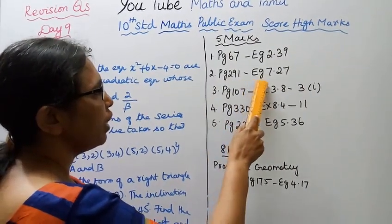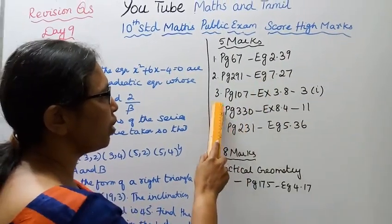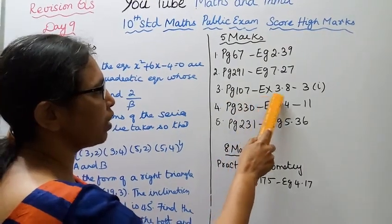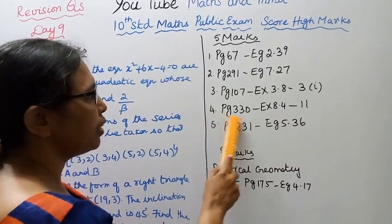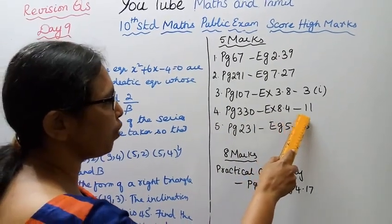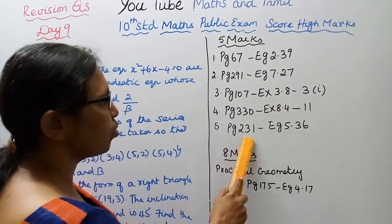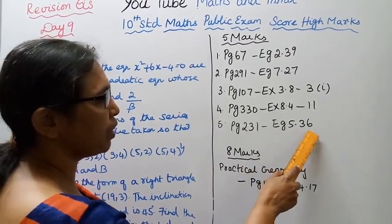Page 291, example 7.27. Page 107, page 107, example 3.8. Third one, first sum. Page 330, exercise 8.4. Page 231, example 5.36.